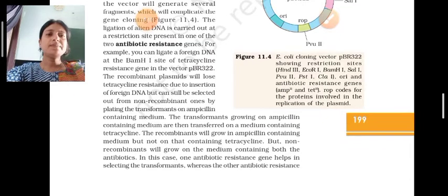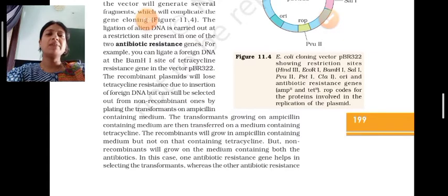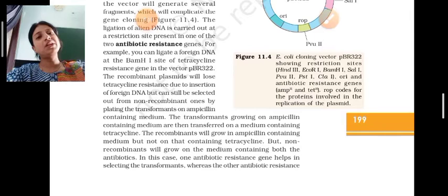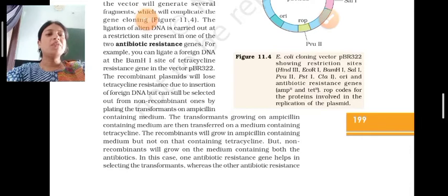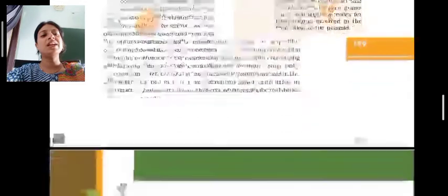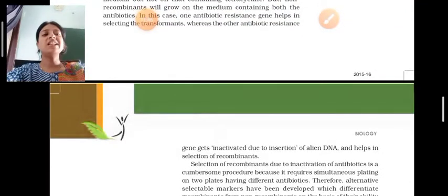इस case में one antibiotic resistance gene helps in selecting the transformants, whereas the other antibiotic resistance gene gets inactivated due to insertion of alien DNA and helps in selection of recombinants. तो दोनों का रहना बहुत ज़रूरी है — non-recombinant और recombinant को identify करने के लिए दोनों antibiotic का होना ज़रूरी है, इसलिए इनको selectable marker कहा जाता है।